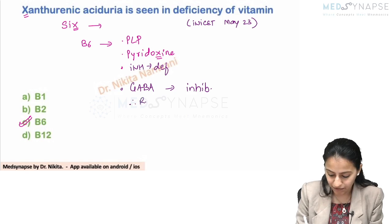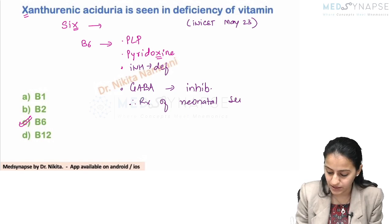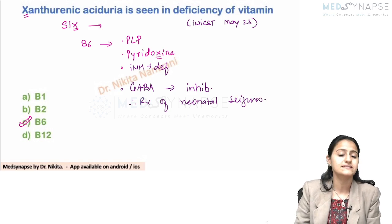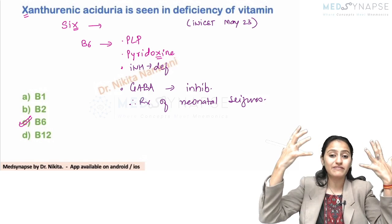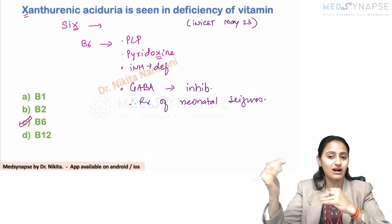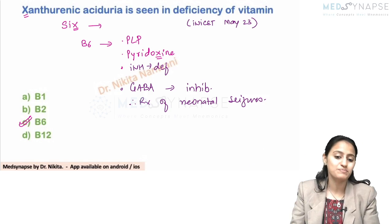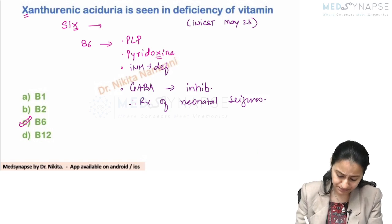Therefore, B6 is used in the treatment of neonatal seizures — another important point that has been asked in AIIMS exams. In seizures, we want more inhibitory neurotransmitter, so more GABA. We will give B6 there.